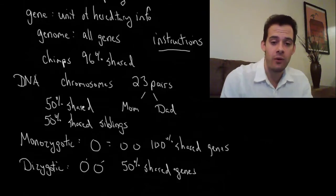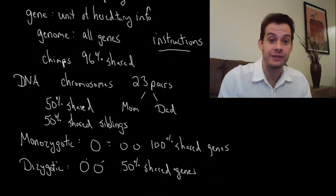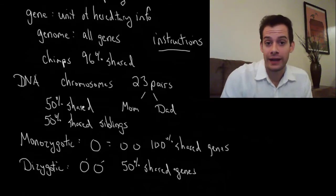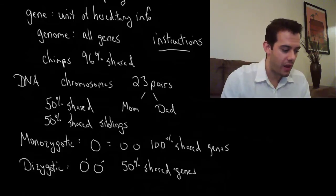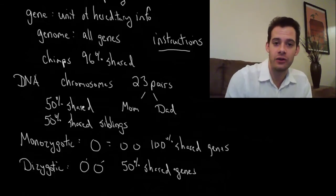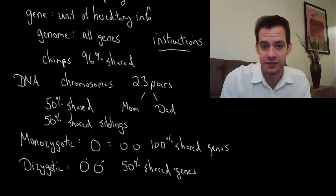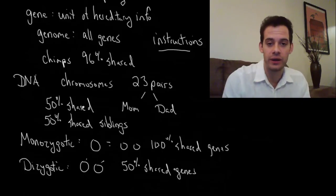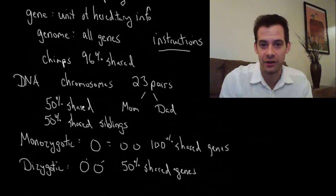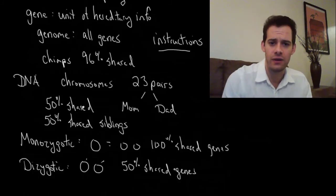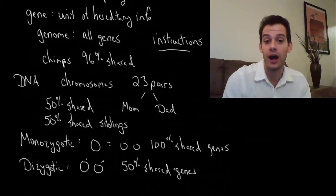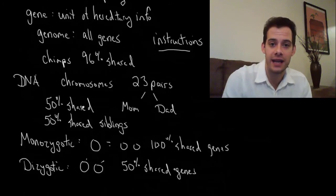In the next video I'll talk about how we do studies of twins to try to determine how much we inherit certain traits or certain behaviors from our parents. And we'll see why it is that researchers are so interested in studying twins. Hopefully this gave you a good understanding of some of the basic ideas of genetics, some of the terminology so you know what genes are, genomes, DNA, chromosomes, and we'll go into more detail on many of these topics in future videos. Thanks for watching.